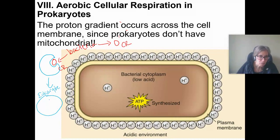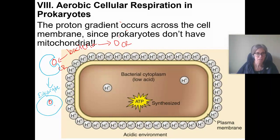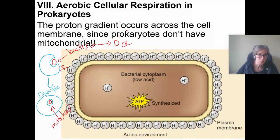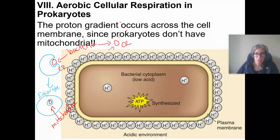That lucky eukaryote now has a mutualistic, symbiotic relationship with the bacteria inside it. Why does it have this? Well, this evolved eventually into mitochondria. The inner membrane had originally come from the bacteria, so free-living bacteria can still do this same process of cellular respiration.